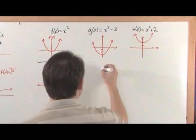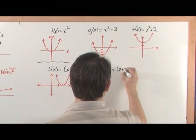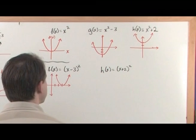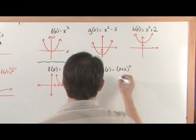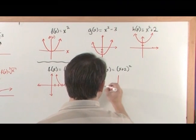Now, what if you wanted to graph h of x is equal to x plus two squared? Then what you would have to do there is look at it in a similar manner.